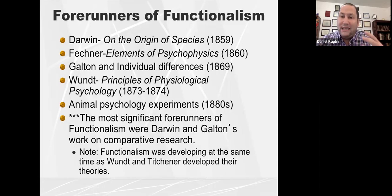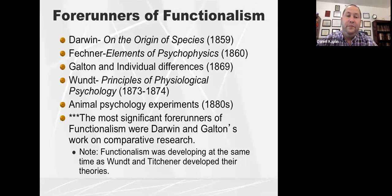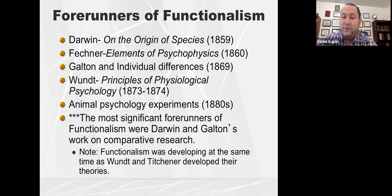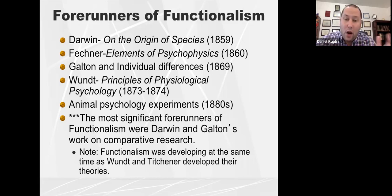There are several forerunners of functionalism: Charles Darwin, which we'll talk a lot about today; Fechner, which we talked about in lecture three; Galton, which we'll talk about in the next lecture; Wundt, which we talked about in lecture four; and some of the animal psychology experiments discussed in lecture three. The most significant forerunners of functionalism are Darwin and Galton's work on comparative psychology or comparative research.